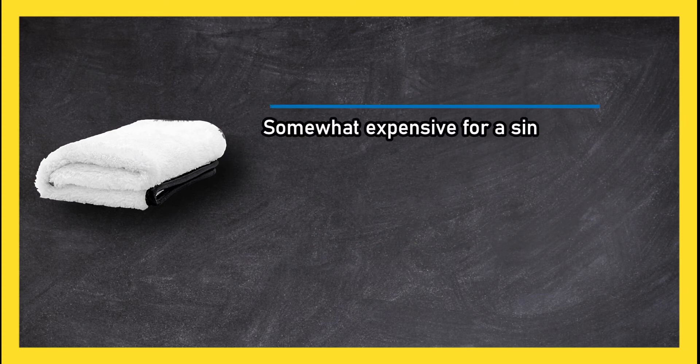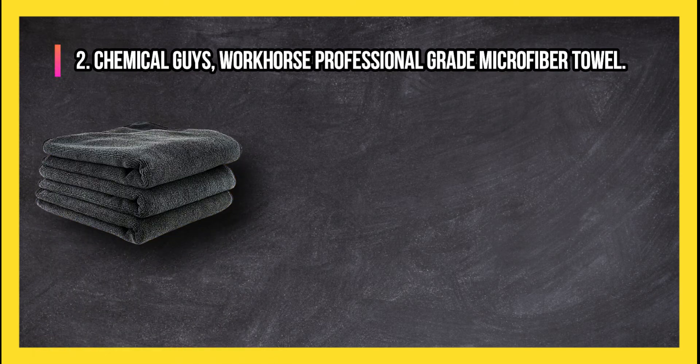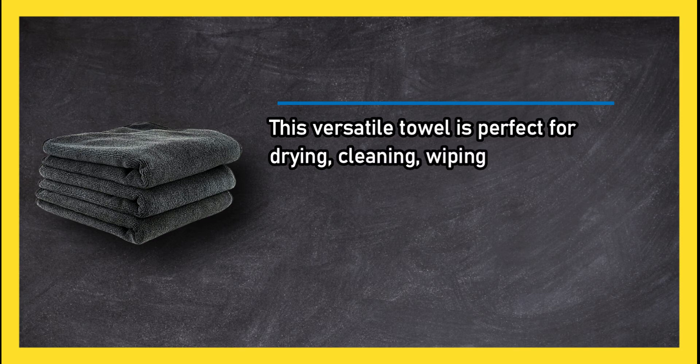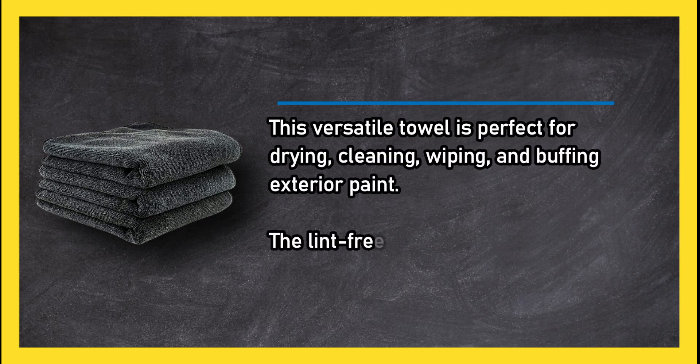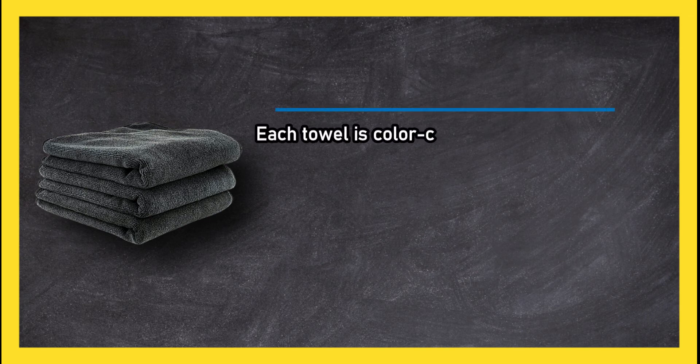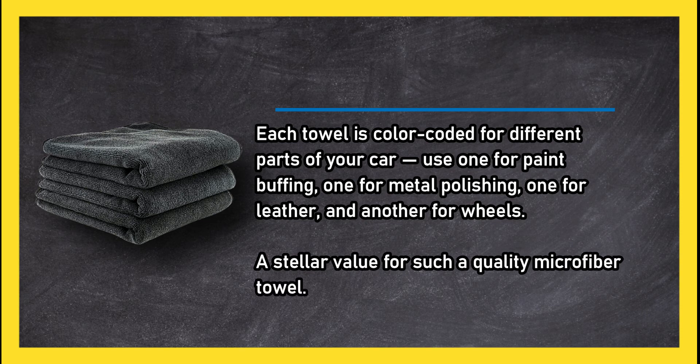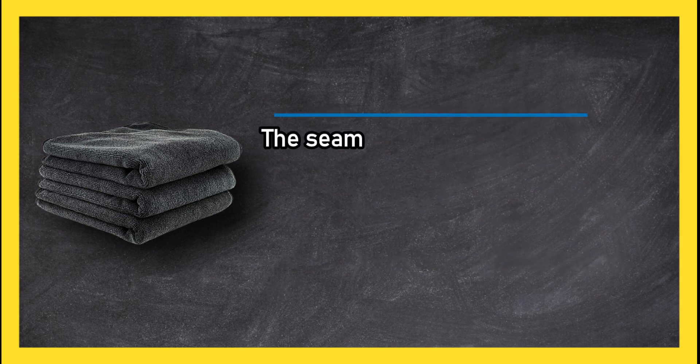At number two, Chemical Guys Workhorse Professional Grade Microfiber Towel. This versatile towel is perfect for drying, cleaning, wiping, and buffing exterior paint. The lint-free fabric is industrial grade and 100% machine washable. Each towel is color coded for different parts of your car. Use one for paint buffing, one for metal polishing, one for leather, and another for wheels. A stellar value for such a quality microfiber towel. The seams at the corner of each towel may fray over time.